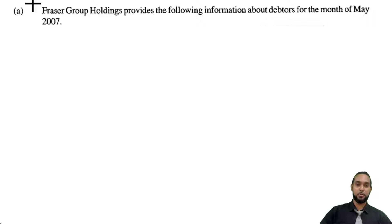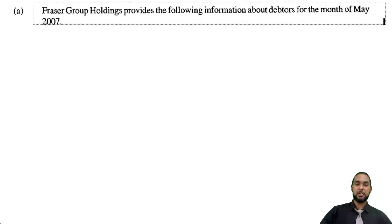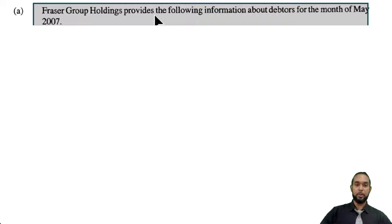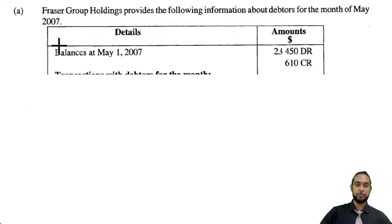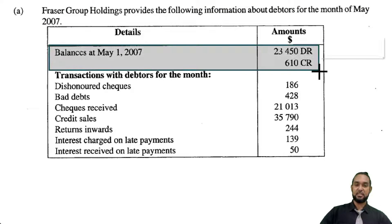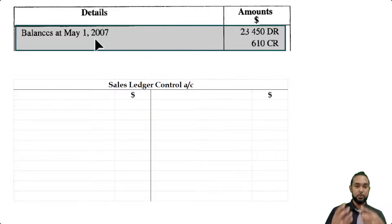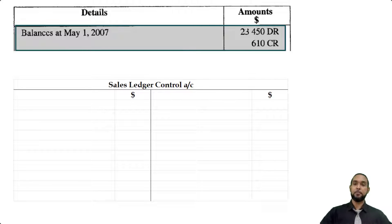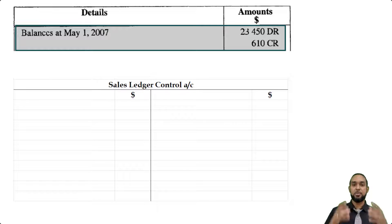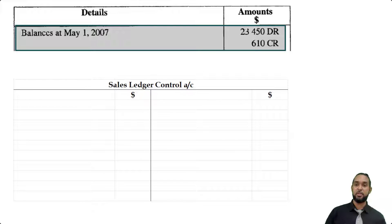Let's take a look at the control account part first. It tells us that Frasier Group Holdings provides the following information about the debtors for the month of May 2007. Let's pull up the control account and we're going to populate it as we go along, then simply balance it off and find a closing balance. This is a sales or debtors control account, representing an asset of debtors.